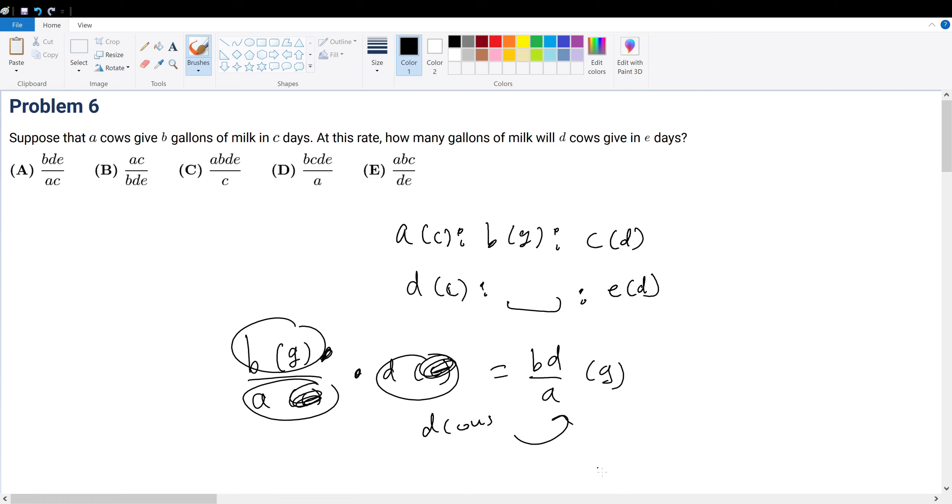But we are also given the units of days, and that's also a pretty simple conversion factor. What do we know is true about BD over A? For every D cows that produces this many gallons, how do we know if it's...